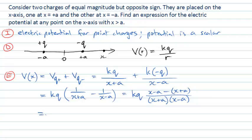And we should be able to see now that this denominator can be written as the difference of two squares: x squared minus a squared.